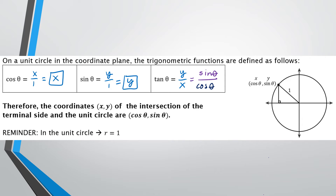Each ordered pair on the unit circle — instead of thinking of it as (x, y), we can think of it as (cosine, sine). This will be helpful when identifying sine, cosine, and tangent of certain angles. A quick reminder: in the unit circle, r always equals 1, so we're really only focused on what our x and y values are.